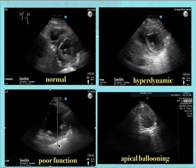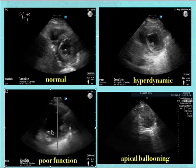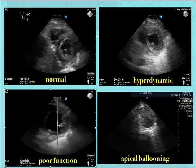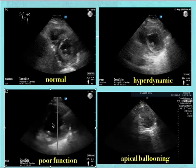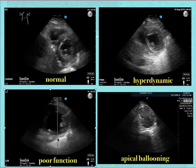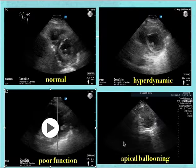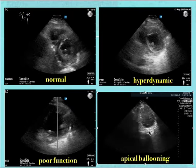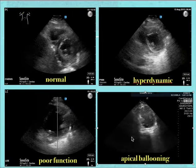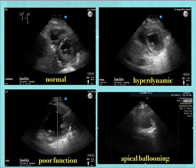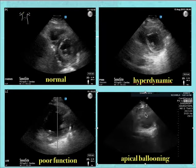Here's the left ventricle in poor function at short axis — you see the papillary muscles, volume in the left ventricle, and no collapsibility. Here's an apical ballooning example: we moved the short axis view toward the apex. Normally the apex is only small, but here you can actually see part of the apex ballooning out. This is apical ballooning, something seen a few times in practice.